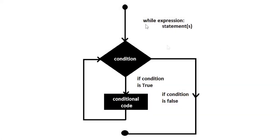Let us see a flowchart so that you can get a better idea about the flow of the while loop. Here is the flowchart — you will write the while keyword, then use the expression, then write certain statements. If the condition is true, it will execute the conditional code repeatedly as long as the condition is true, and then after that it will terminate the program.